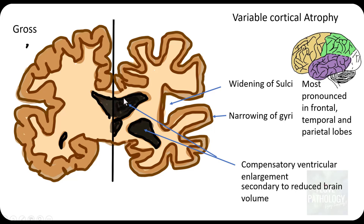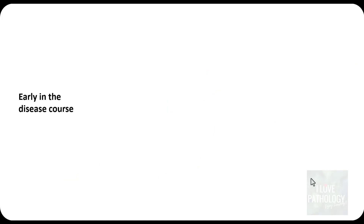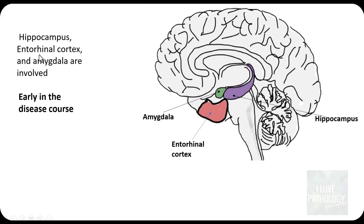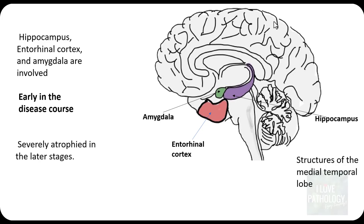That is a normal ventricle for reference. These are compensatory ventricular dilatation or enlargement, secondary to reduced brain volume, also referred to as hydrocephalus ex vacuo. Early in the disease course, the hippocampus, entorhinal cortex, and amygdala are the ones which are involved — all structures of the medial temporal lobe. Though they are involved early, these are the ones which are most severely atrophied in the later stages of the disease.